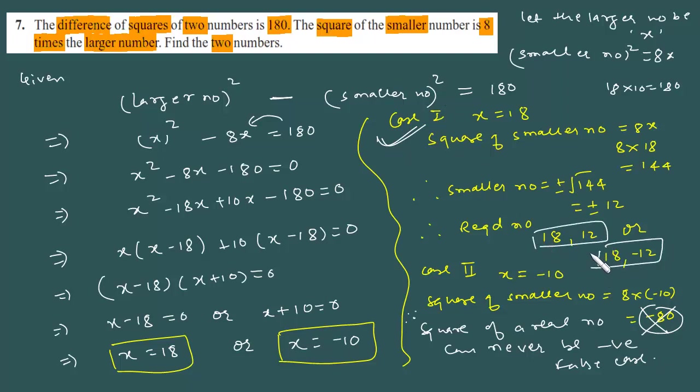Therefore, case 1 is true and the required numbers are 18 and 12. This completes our solution. Let us move on to the next question.